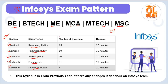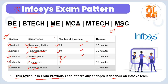This pattern was also followed in previous examinations. If there are any changes, it depends on Infosys, but I believe this pattern will be followed in the main examination as well. The skills tested are reasoning, technical, verbal, pseudocode, and numerical puzzles, with specific number of questions and duration for each section. This is for B.Tech, M.E., MCA, M.Tech, and M.Sc candidates — the Systems Engineer role.